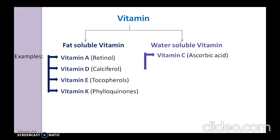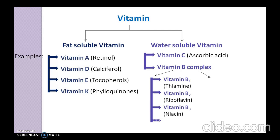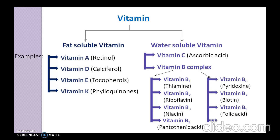Water soluble vitamins include vitamin C, known as ascorbic acid, and vitamin B complex. Vitamin B complex is a group of vitamins: vitamin B1, known as thiamine; B2, riboflavin; B3, niacin; B5, pantothenic acid; B6, pyridoxine; B7; B9, folic acid; and vitamin B12, which is cyanocobalamin.